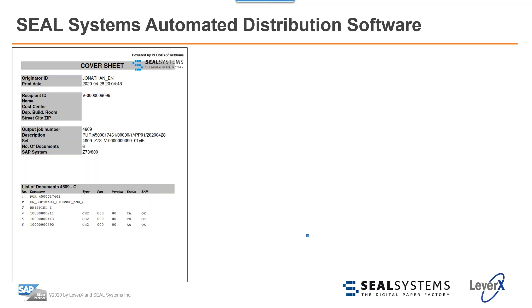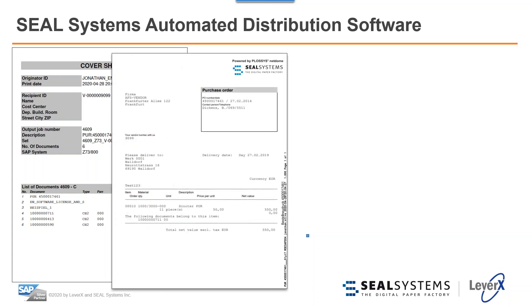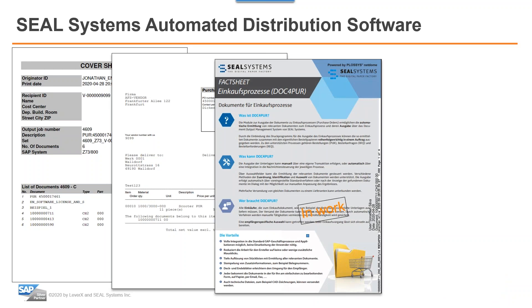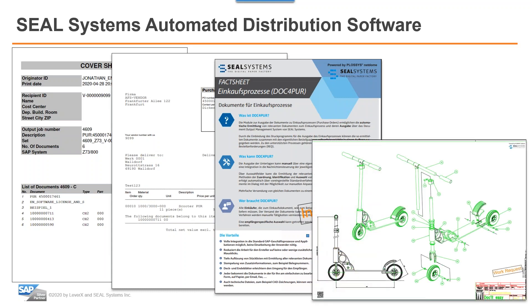This set of screenshots represents the document package presented to Seal for distribution to stakeholders — it can be distributed internally or externally as needed. A particularly valued optional document is the cover sheet, which displays relevant information about job statuses: who it's from, where it's going, which system it originated from, and a document list — essentially an at-a-glance audit trail showing document status. In addition to the cover sheet, we have a purchase order, a fact sheet from IPS, and an AutoCAD or SolidWorks CAD drawing.